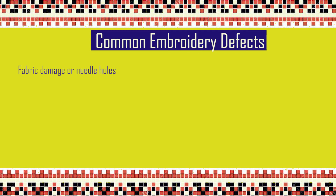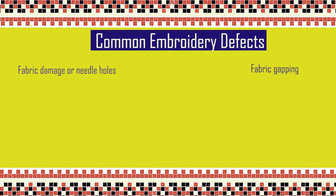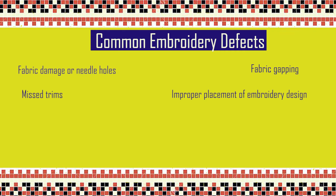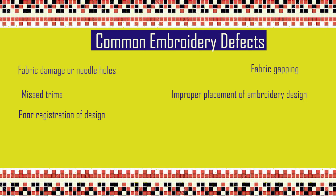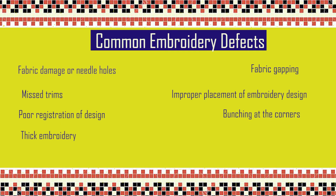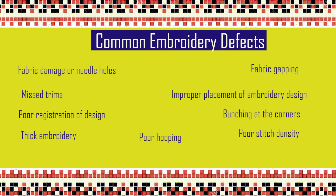Embroidery defects may occur while doing the embroidery or while finishing an embroidered product. Some of the common embroidery defects are: fabric damage or needle holes, fabric gapping, missed trims, improper placement of embroidery design, poor design registration, bunching at the corners, thick embroidery, poor stitch density, and poor hooping. Let us now look at these defects one by one.